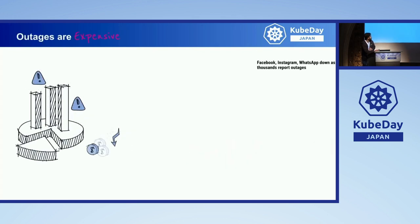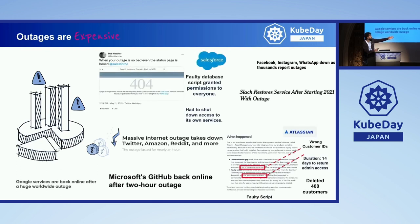Here is one outage that recently happened with Meta, where Facebook, Instagram, and WhatsApp were down, reporting thousands of outages. But this is not just one outage — here are examples of outages happening day in and day out, where large enterprises are having outages every day. Scaling is not the only issue; there are hardware issues and environment issues. For example, moving from monolith to microservices architectures — issues are supposed to happen.